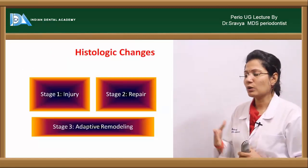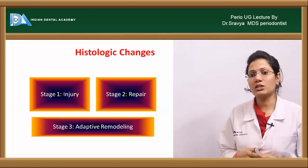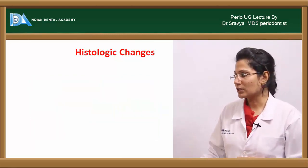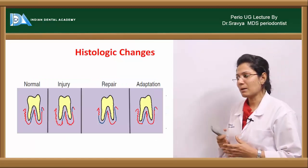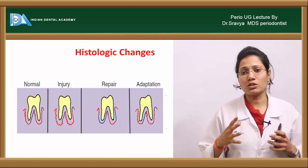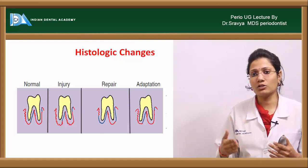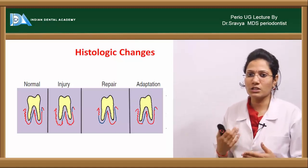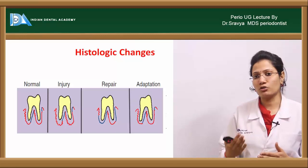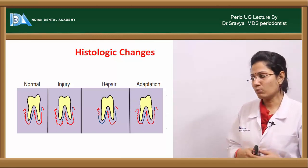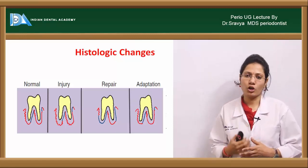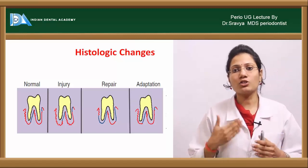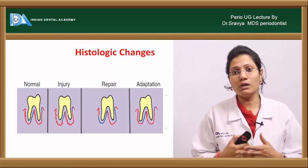The histological changes can be grouped into three stages: the stage of injury, the stage of repair, and the stage of adaptive remodeling. During the stage of injury, there is constant pressure on the periodontium and it begins to break down. In the stage of repair, the body tries to repair the damage to resorptive areas of the alveolar bone. If the body is not able to cope with the repair process, then comes the third stage — adaptive remodeling — where the periodontium tries to readapt to the abnormal occlusal forces.